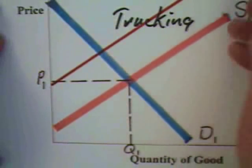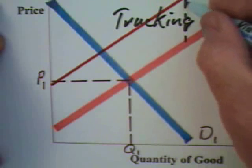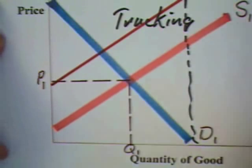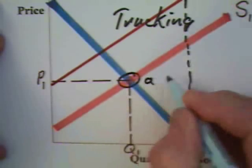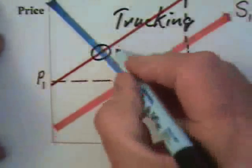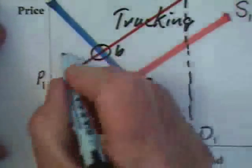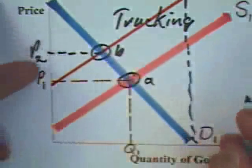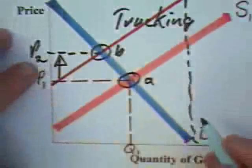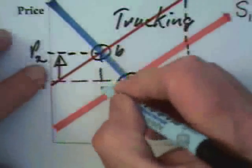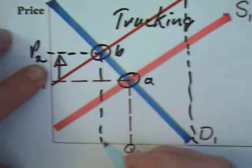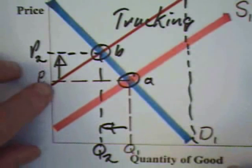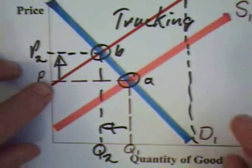By that, I mean that the truckers are going to now demand a higher price for any given quantity. The equilibrium is going to move from point A to point B, which is to say that in the United States, we should expect — as a result of development in China and India — an increase in the price of trucking services and a decrease in the quantity due to the price increase in gasoline.